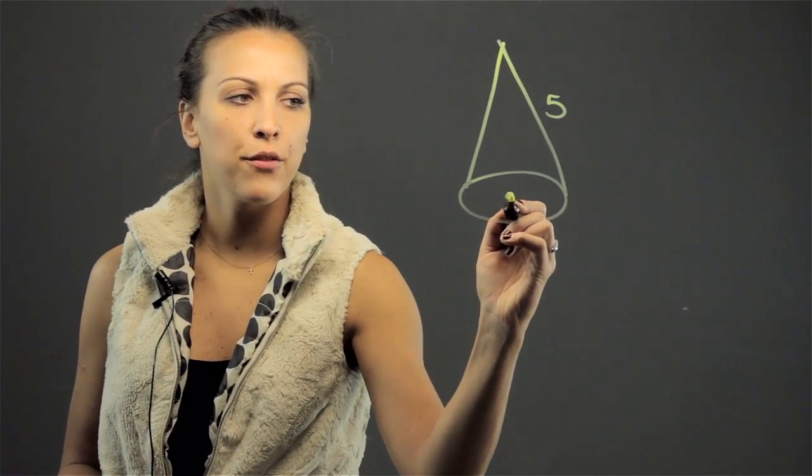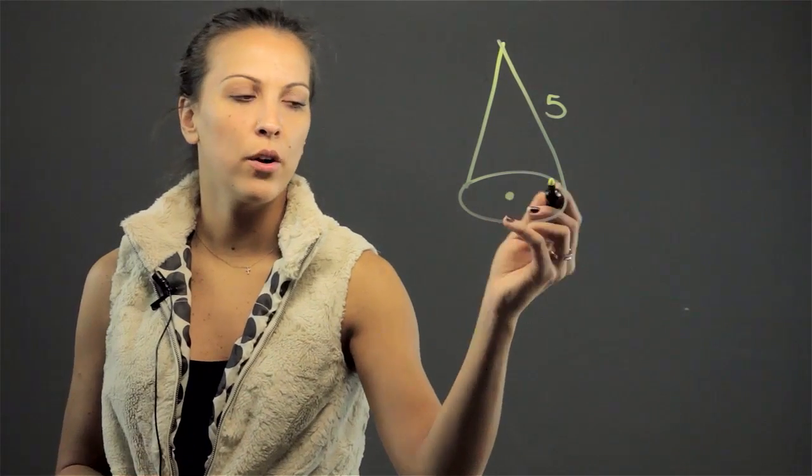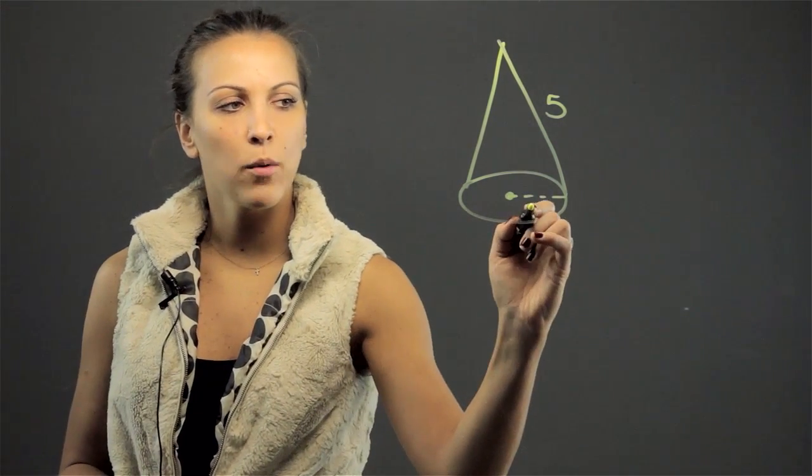And if we want to find the radius, the radius is the length from the center of the circle that's in the bottom of the cone over to the edge of the circle. So this is what we're looking for, the radius.